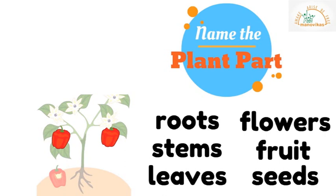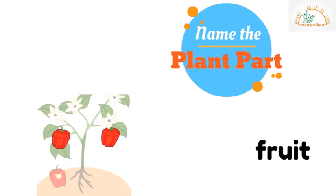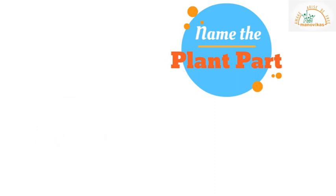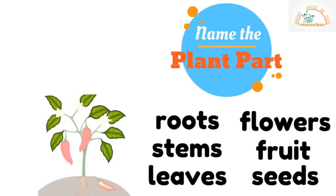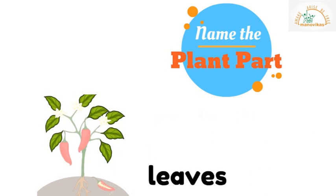Look at this picture of a plant — which plant part is colored in? Yes, the fruit! Here is the next one — what plant part is colored in? Yes, the leaves — the leaves are colorful.